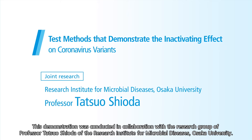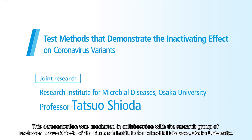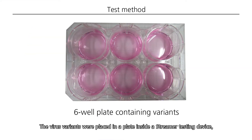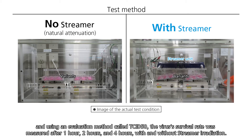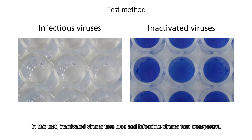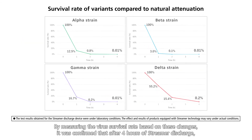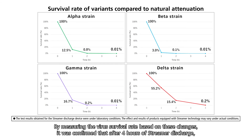This demonstration was conducted in collaboration with the research group of Professor Tatsuo Shioda of the Research Institute for Microbial Diseases, Osaka University. The virus variants were placed in a plate inside a streamer testing device, and using an evaluation method called TCID50, the virus's survival rate was measured after one hour, two hours, and four hours with and without streamer irradiation. In this test, inactivated viruses turn blue and infectious viruses turn transparent.